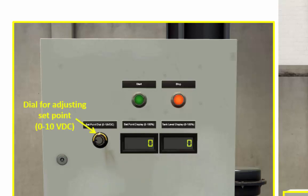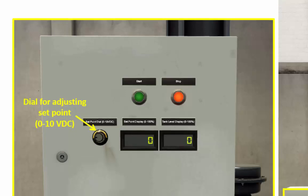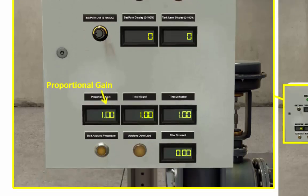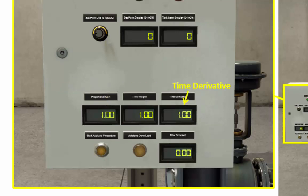You should program your PLC so that this dial adjusts the fill level. This is a 0-10 volt DC dial, and the input from that should be scaled to a 0-100% full set point. These displays down here should show the gain values — this one should show the proportional gain, this one should show the time integral, and this one should show the time derivative.